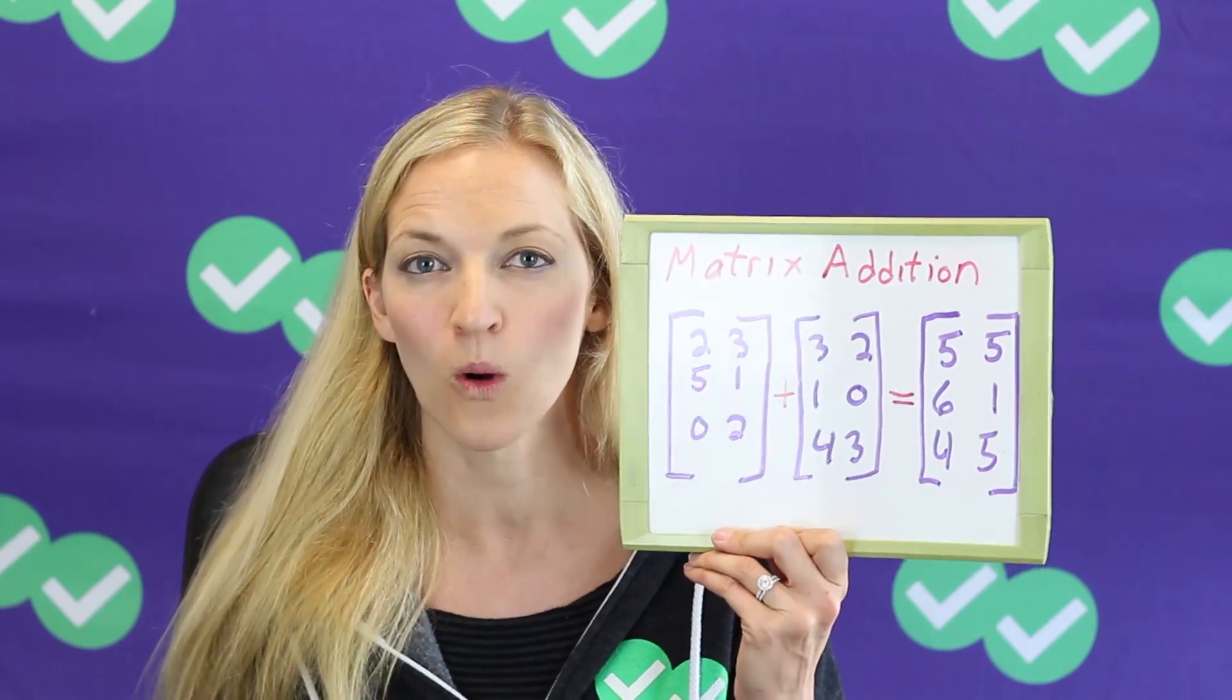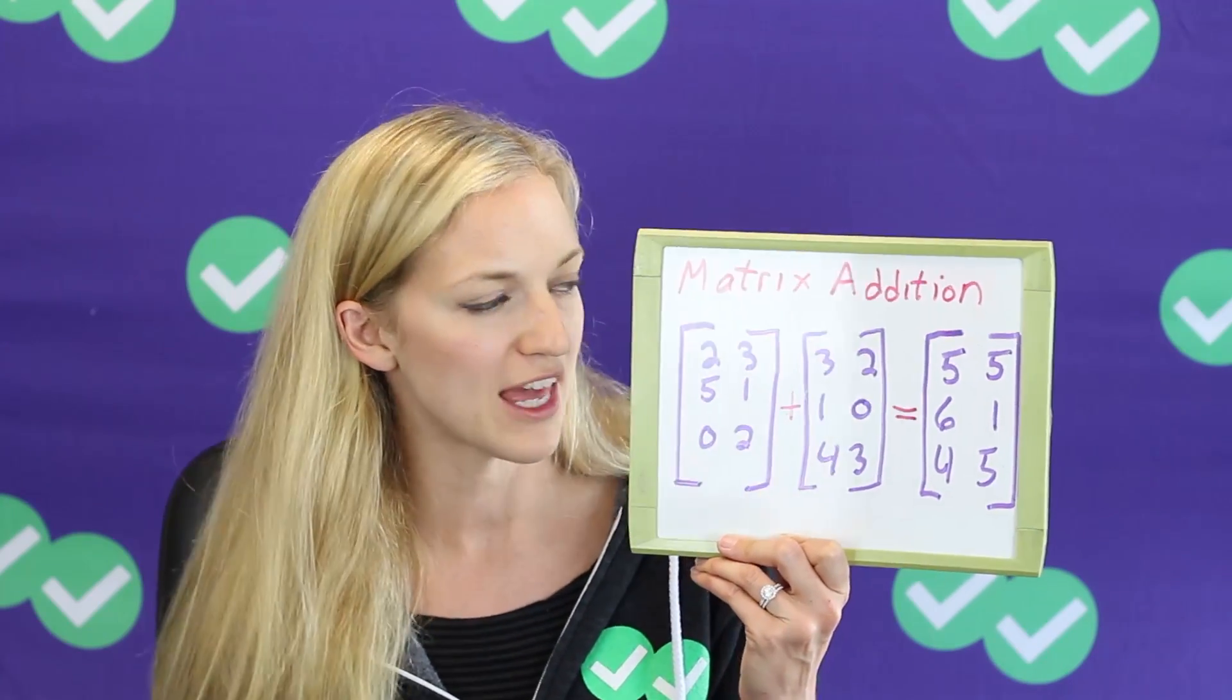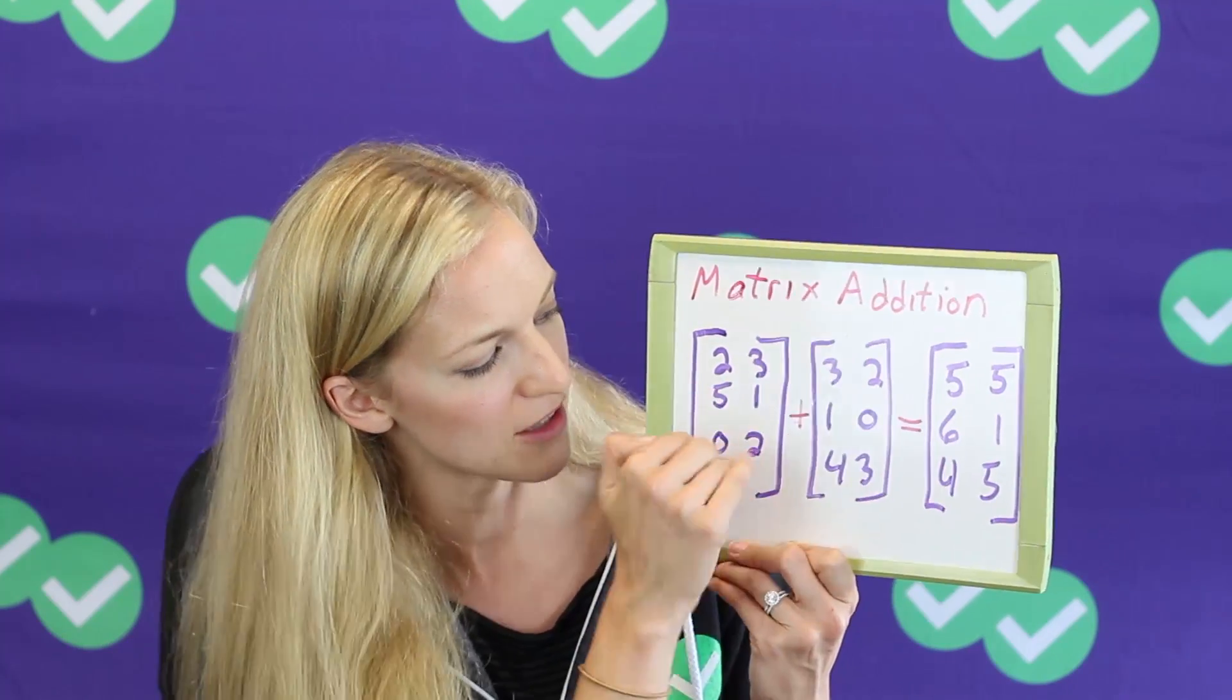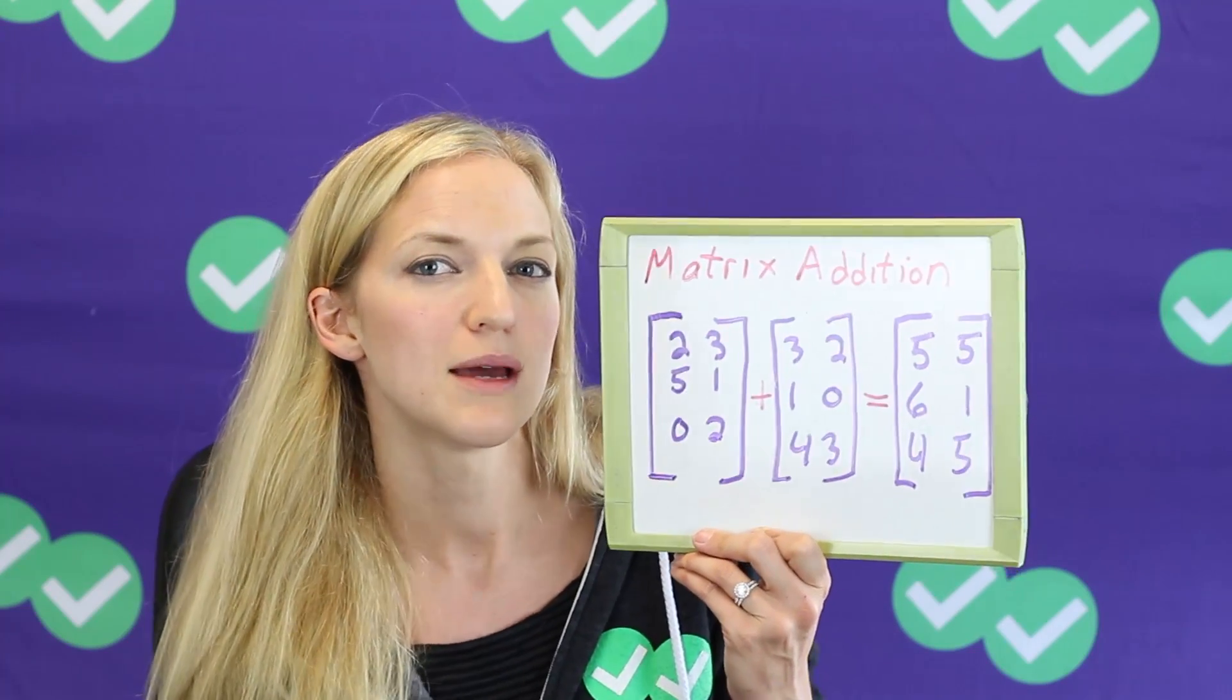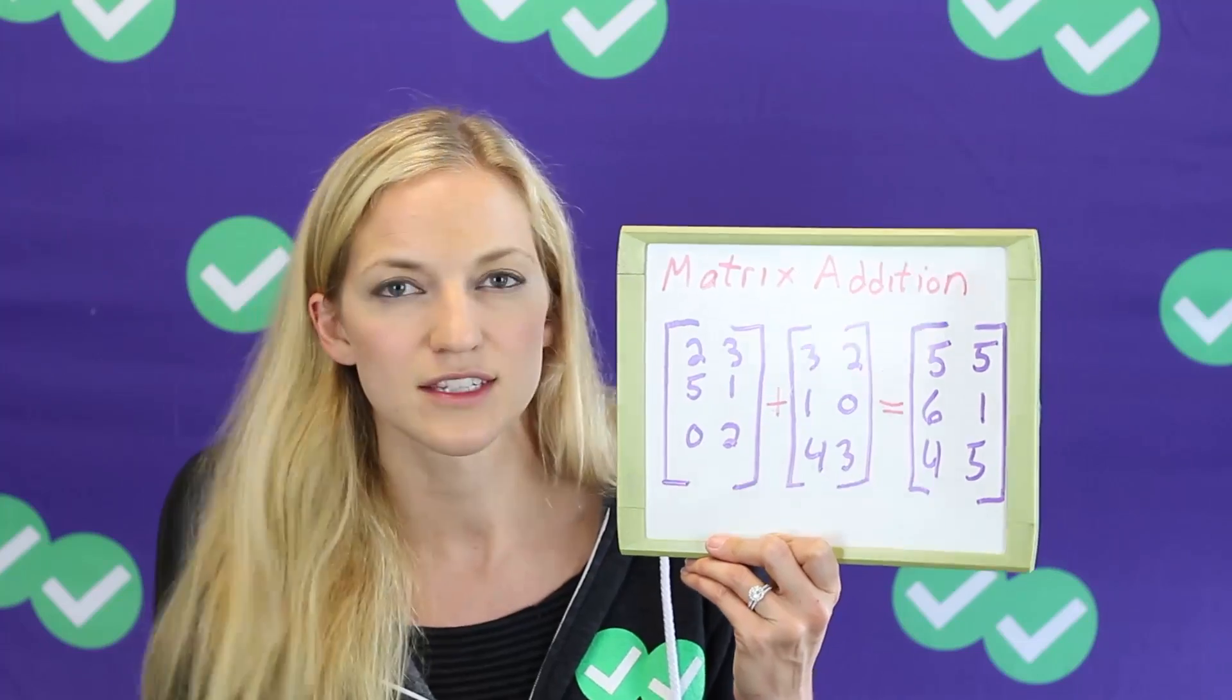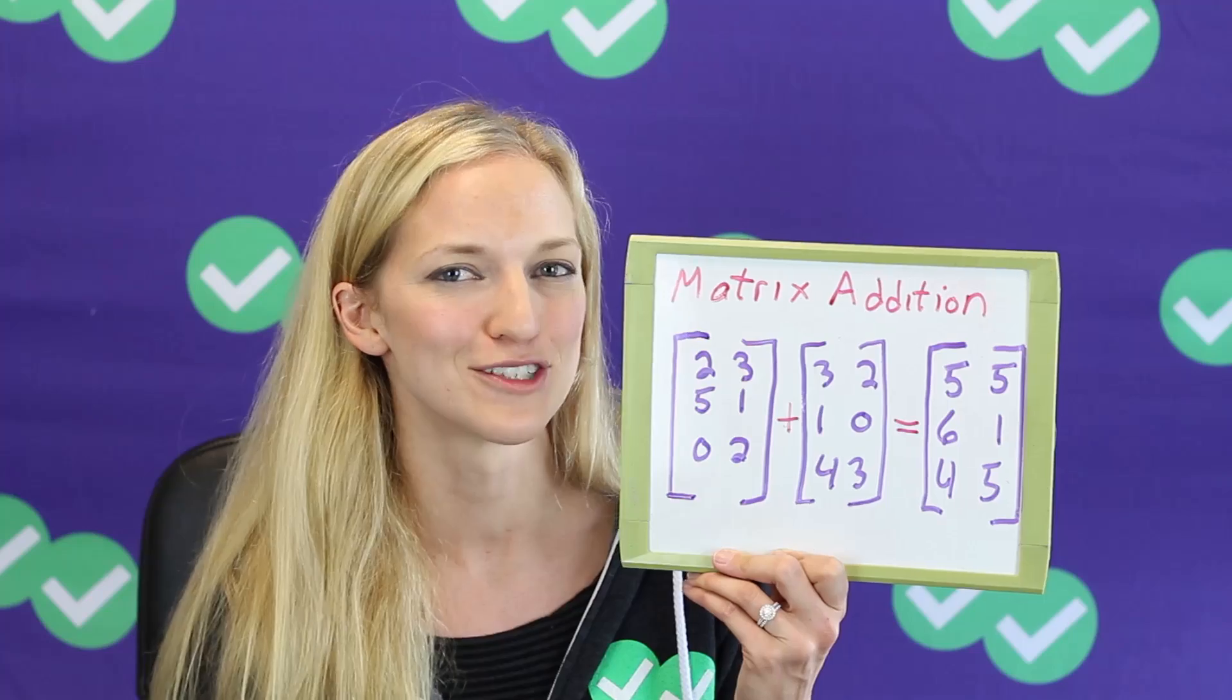Now, something that is important to note is that you can only add matrices if they have the exact same dimensions. Otherwise, you'd end up with something weird, you wouldn't have anything to do with these numbers or any spots to put them in. So if you see matrices that have two different dimensions, and the ACT asks you to add them, the answer is you can't do that calculation. So it's important to know for that reason.